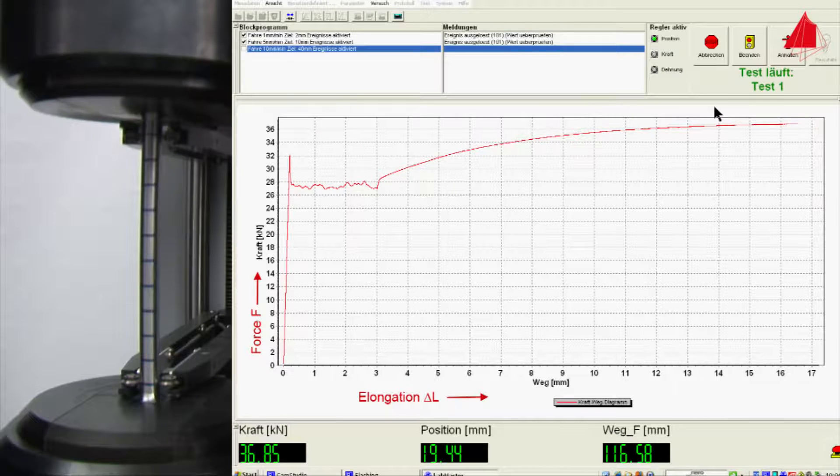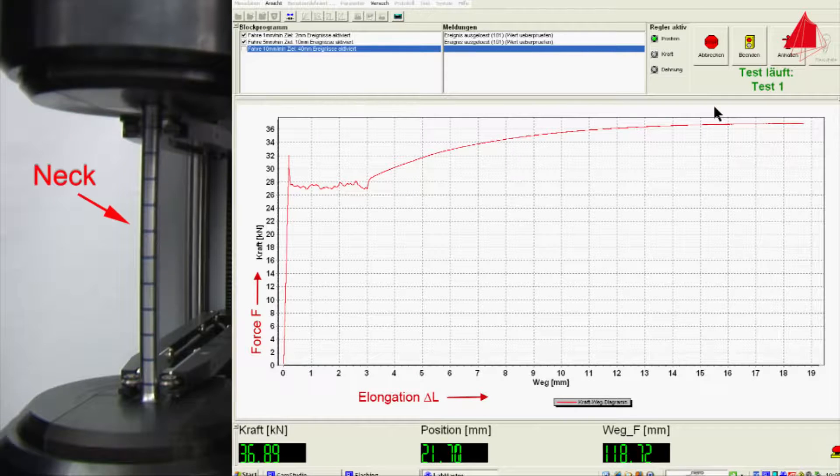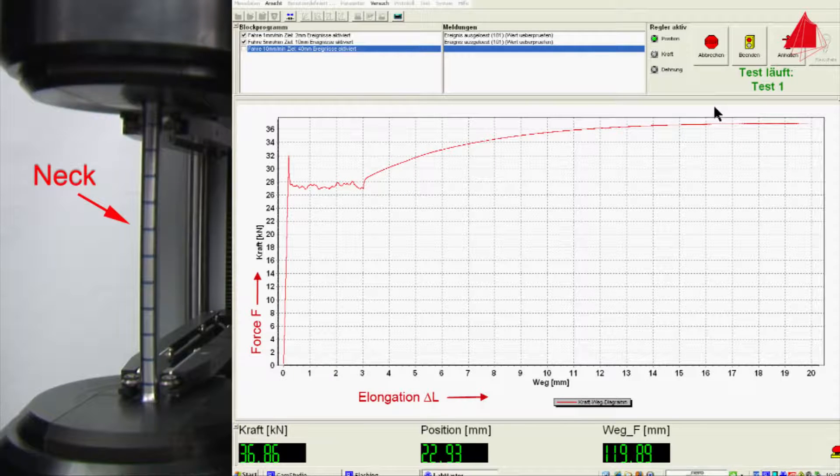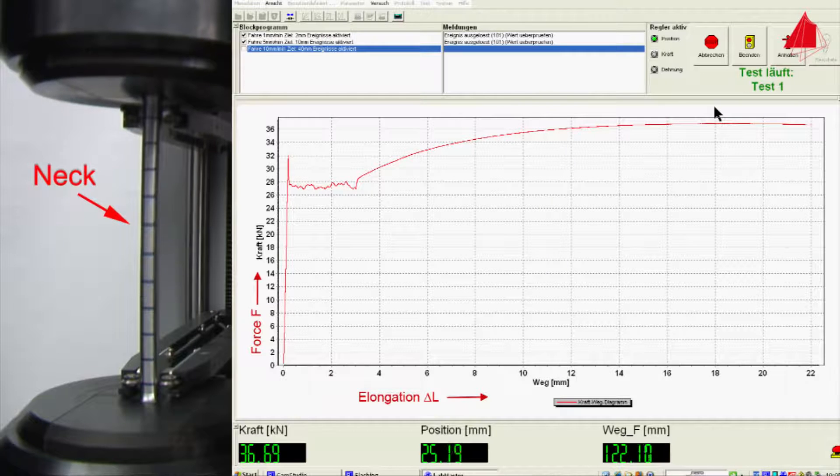As soon as the maximum force is reached, a neck begins to form at one point of the test piece. All further plastic deformation now only takes place at the neck, and eventually the test piece fractures there.